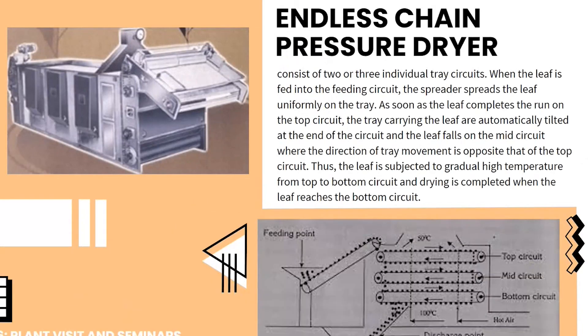The endless chain pressure dryer consists of two or three individual tray circuits. When the leaf is fed into the feeding circuit, a spreader feeds the leaf uniformly on the tray. As soon as the leaf completes the run on the top circuit, the trays are automatically tilted and the leaf falls on the mid-circuit where the tray movement direction is opposite that of the top circuit. The leaf is subjected to a gradual high temperature from top to bottom circuit, and drying is completed when the leaf reaches the bottom circuit.